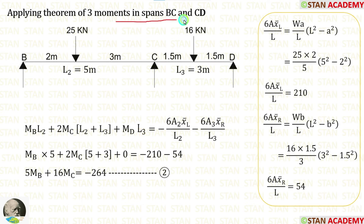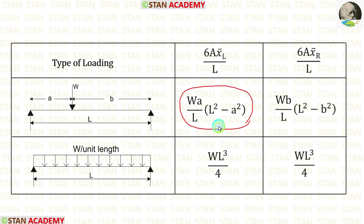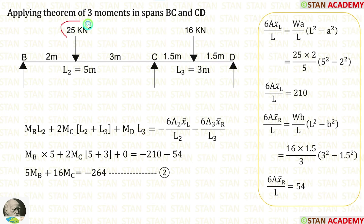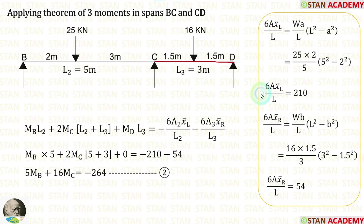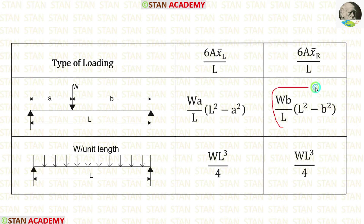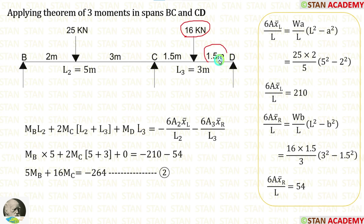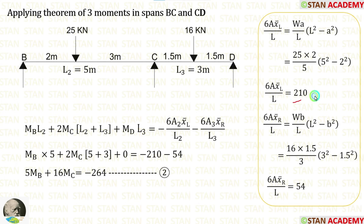Now let us take spans BC and CD. In span BC, we calculate 6Ax̄ left/L using the formula WB/L × (L² − A²). Here W is 25, L is 5, A is 2, giving 210. In span CD, we calculate 6Ax̄ right/L using the formula WB/L × (L² − B²). Here W is 16, B is 1.5, L is 3, giving 54. Applying the values in the equation, we make the second equation.